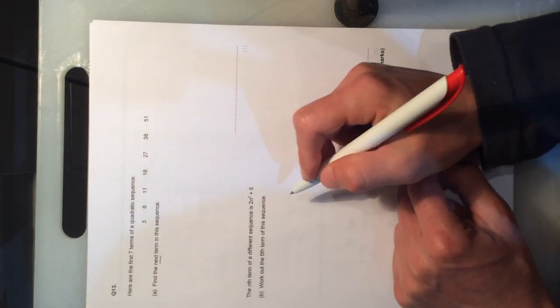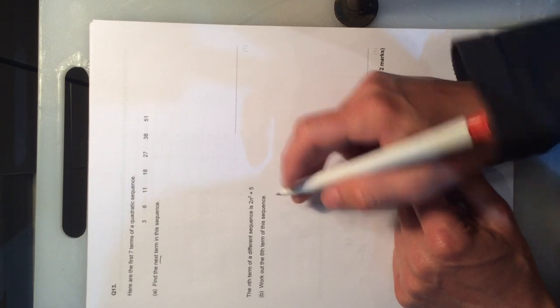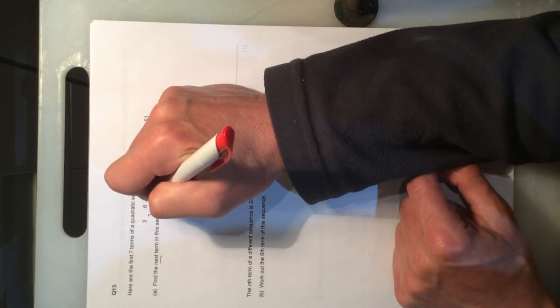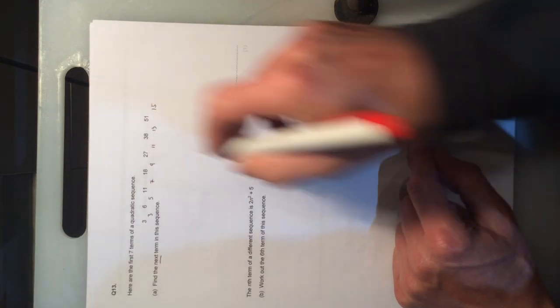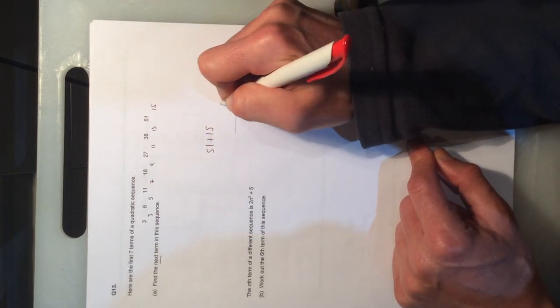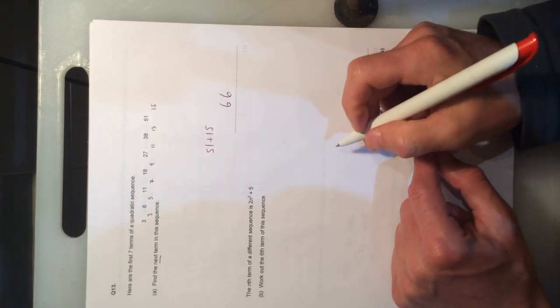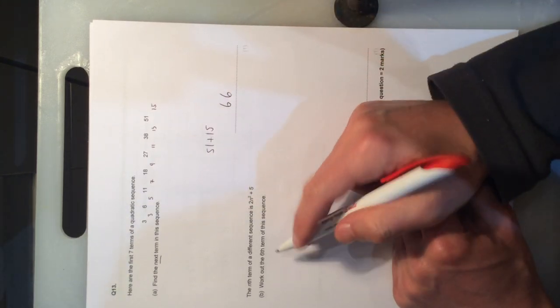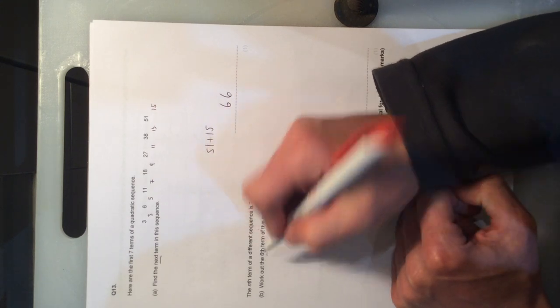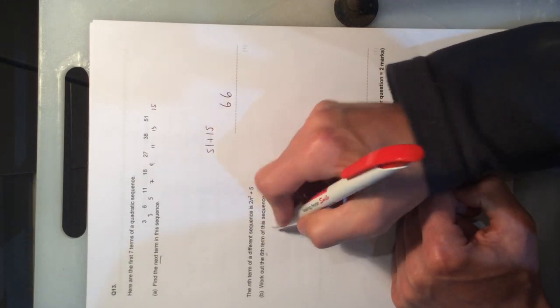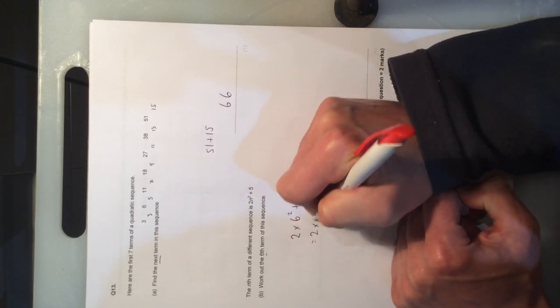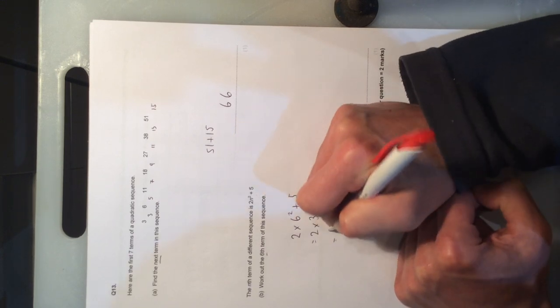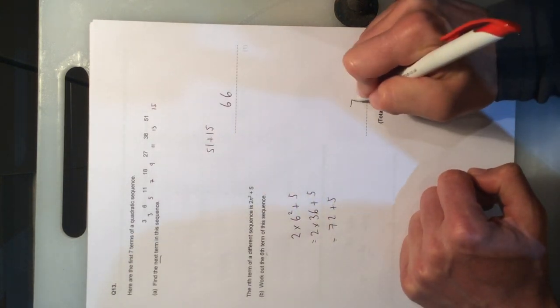The next term in this quadratic sequence, this is going to be all about differences here. So we've got 3, adding on 5, adding on 7, 9, 11, 13. It's going to be adding on 15. 51, add 15, gives us the answer 66. The next one is the nth term of different sequences given by this, and we'll have to work out the sixth term. So we're going to sub in the value of 6 back into the value for n. 2 times by 6 squared, add 5. 2 times by 36, add 5. 72, add 5, to get the answer 77.